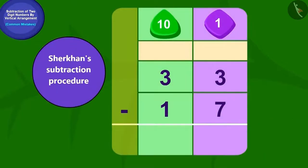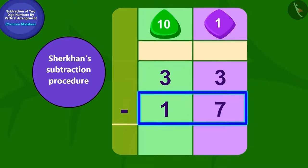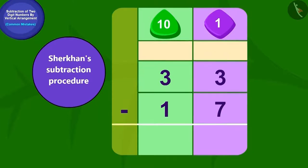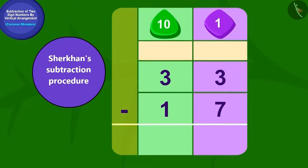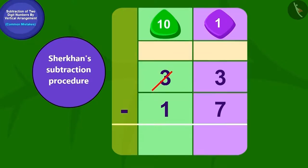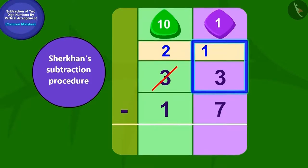Now let us look at Sher Khan's answer. Can we subtract seven ones of 17 from three ones of 33? No. So what do we do now? We will have to borrow one tenth from three tenths of 33. Now, how many ones do we have? Thirteen ones.